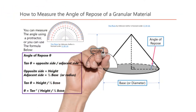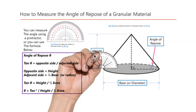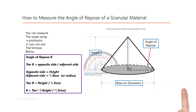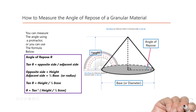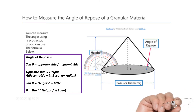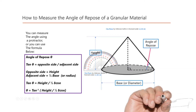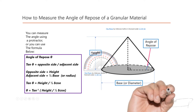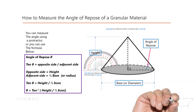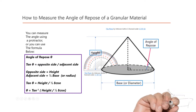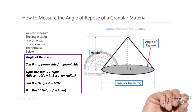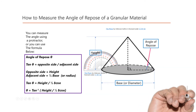You can measure the angle using a protractor, or you can use the formula below. The angle of repose is represented by theta. Tangent theta is equal to opposite side over adjacent side. The opposite side is equal to height, the adjacent side is equal to half the base, or radius. So tangent theta equals height over half the base, and theta equals arc tangent of height over half the base.